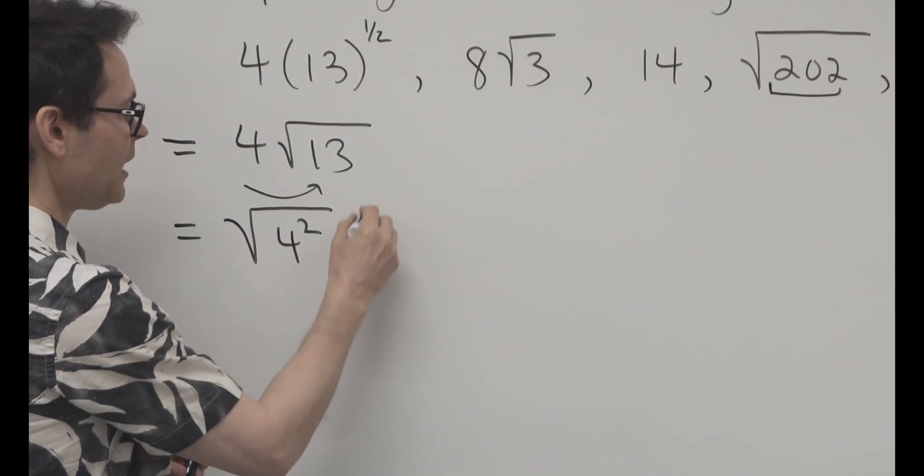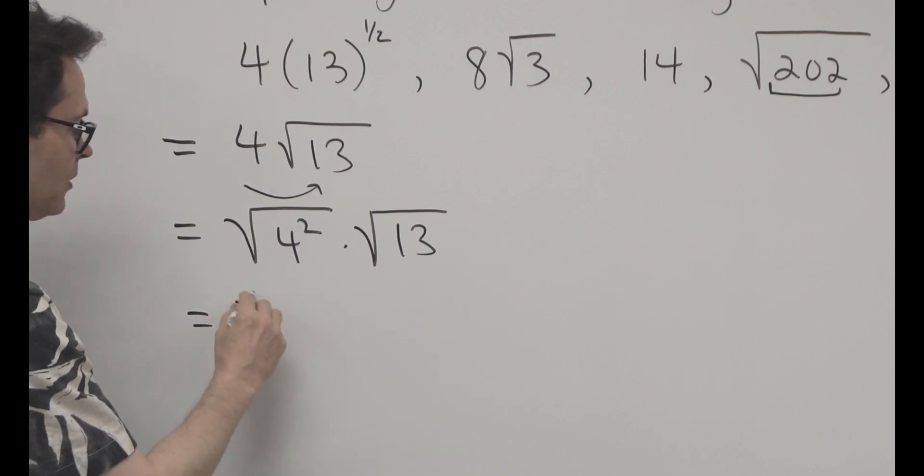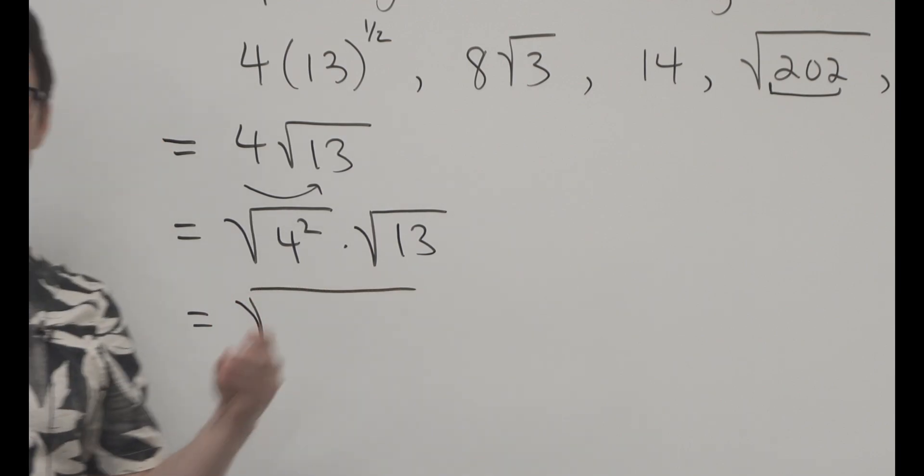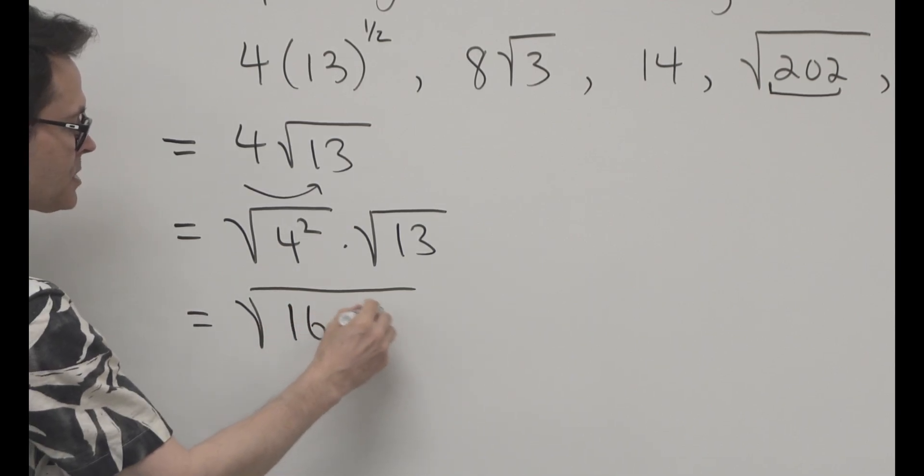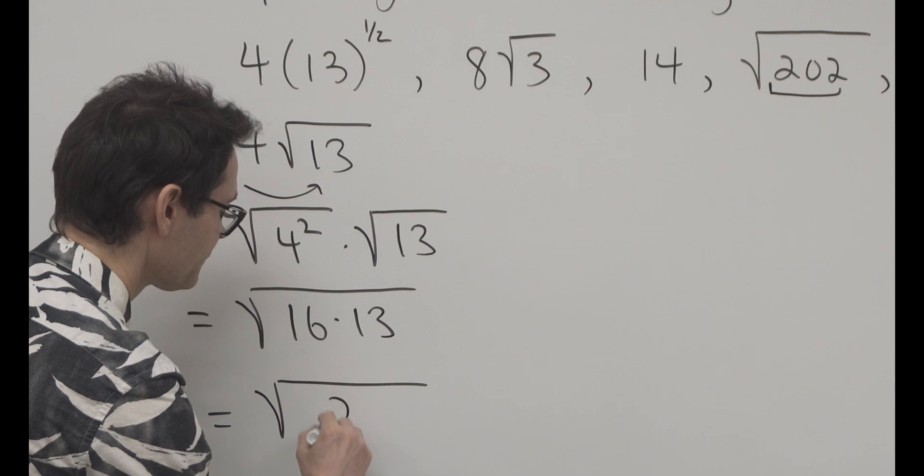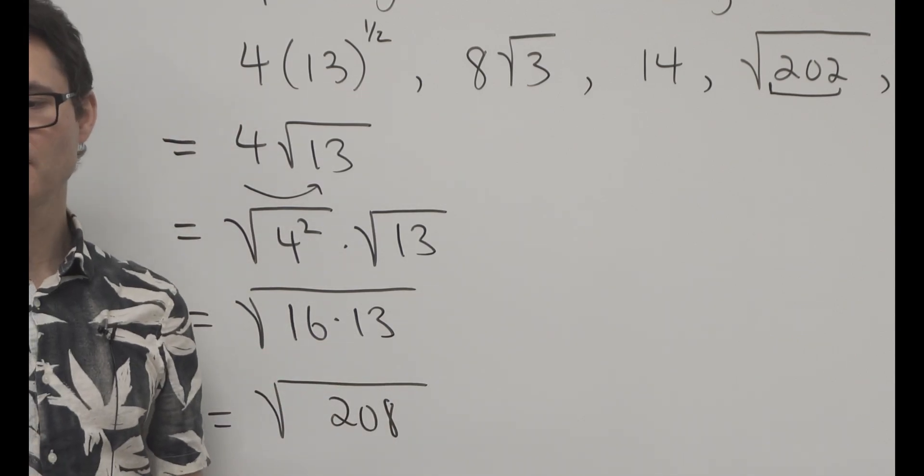That's being multiplied by root 13. Similarly, now 4 can be squared inside the radical, and these can be combined into one radical. So 4 squared is 16 times 13, and it'll be 208. So 16 times 13 is 208.